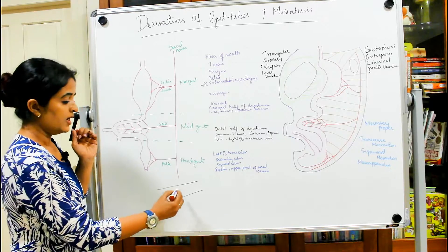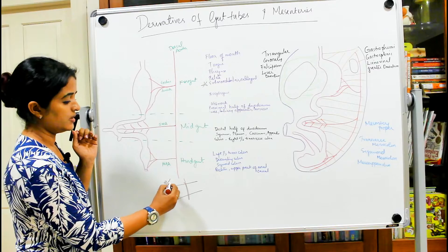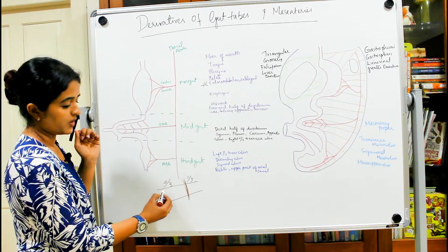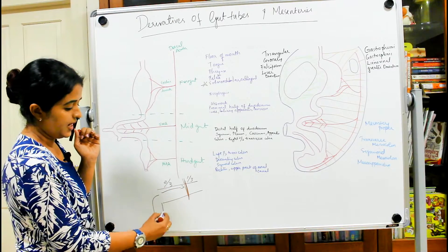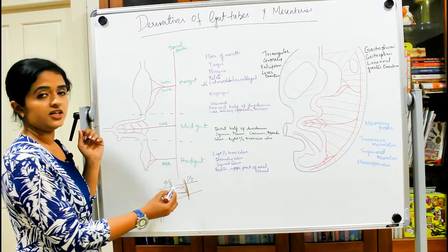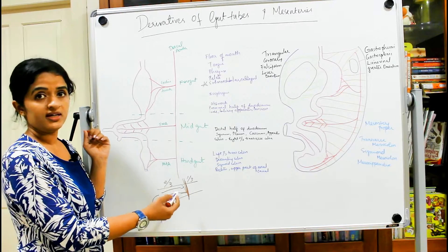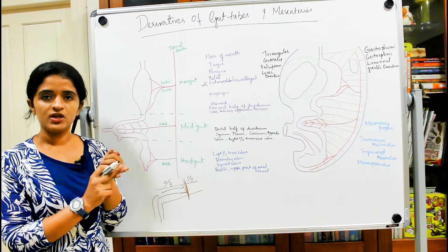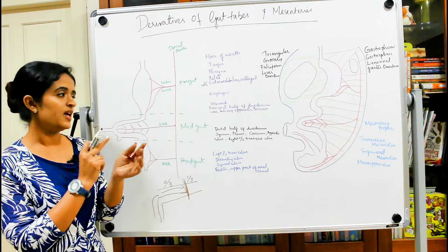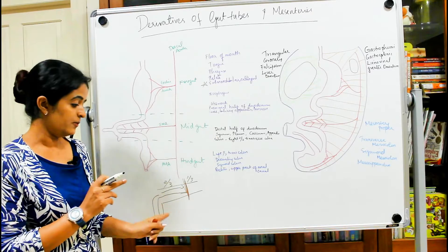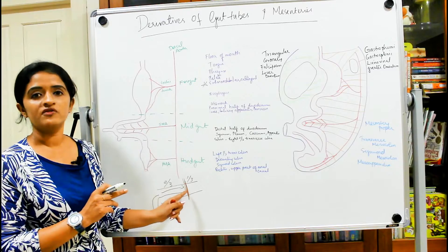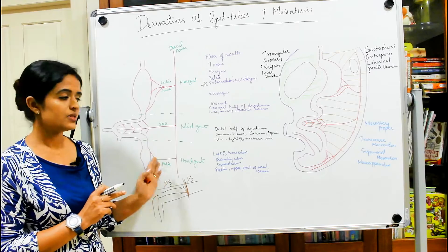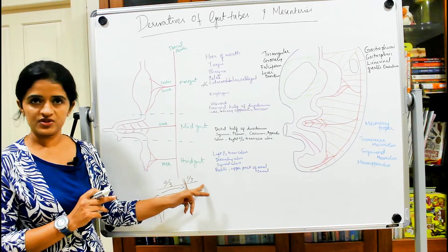The midgut also gives rise to the ascending colon and the right two-thirds of the transverse colon. So to summarize midgut derivatives: distal half of duodenum, jejunum, ileum, cecum, appendix, ascending colon, and right two-thirds of the transverse colon.